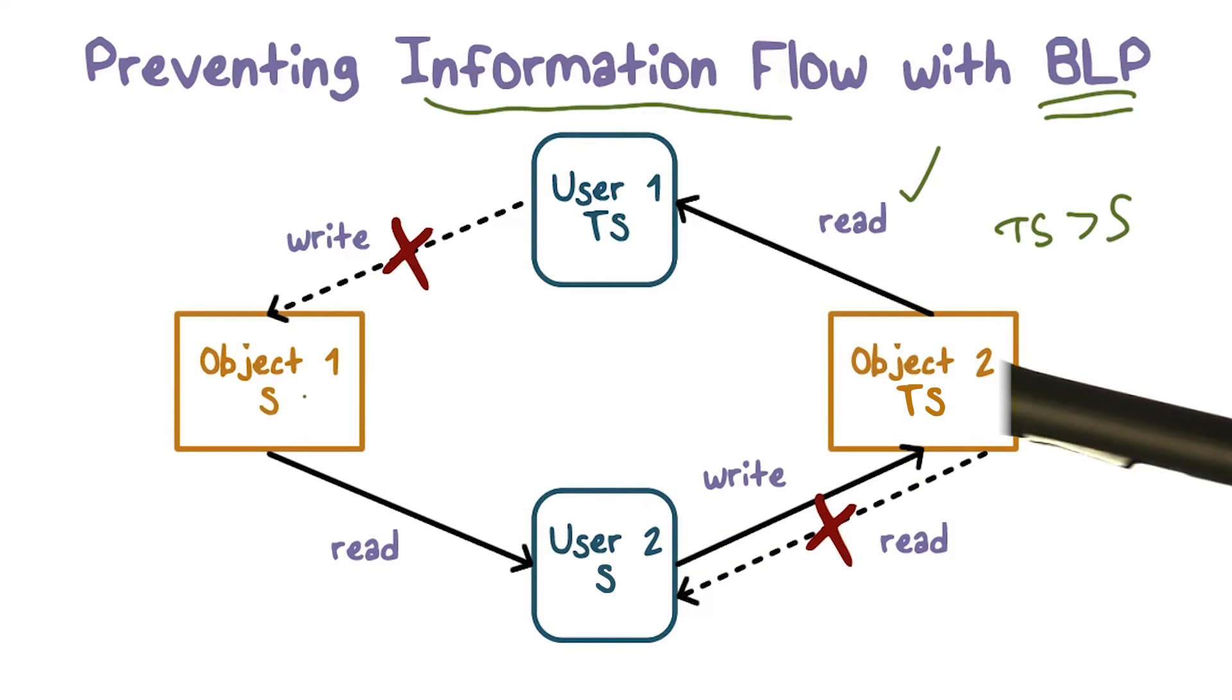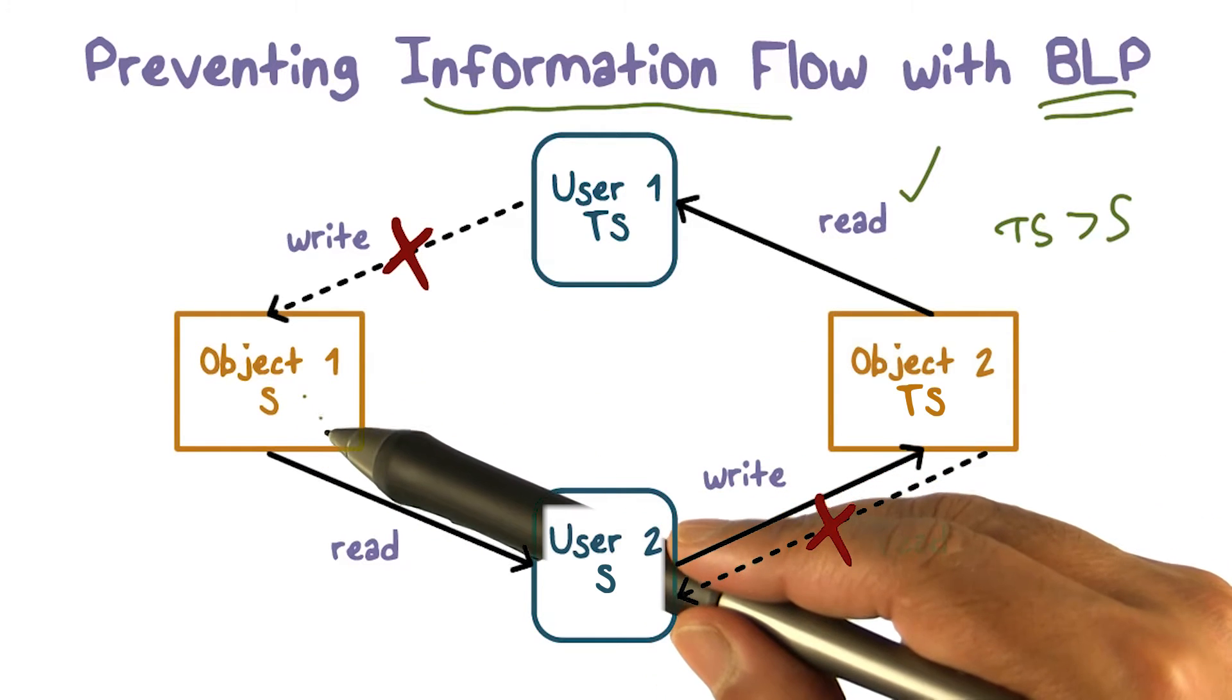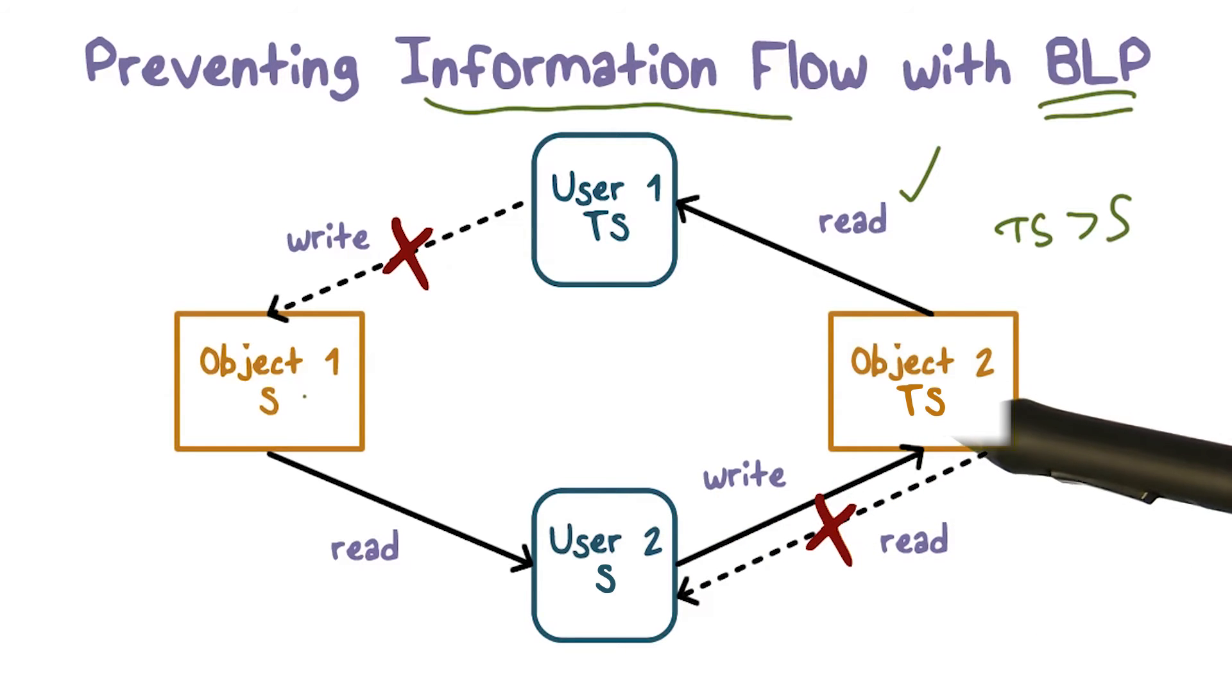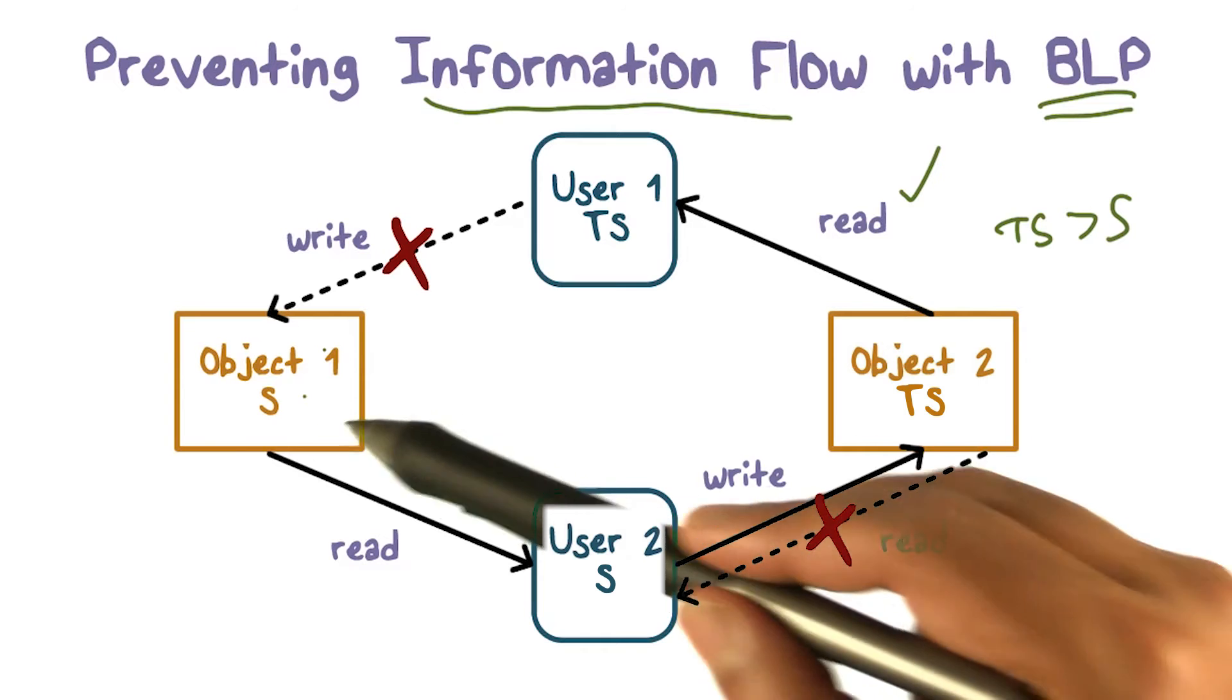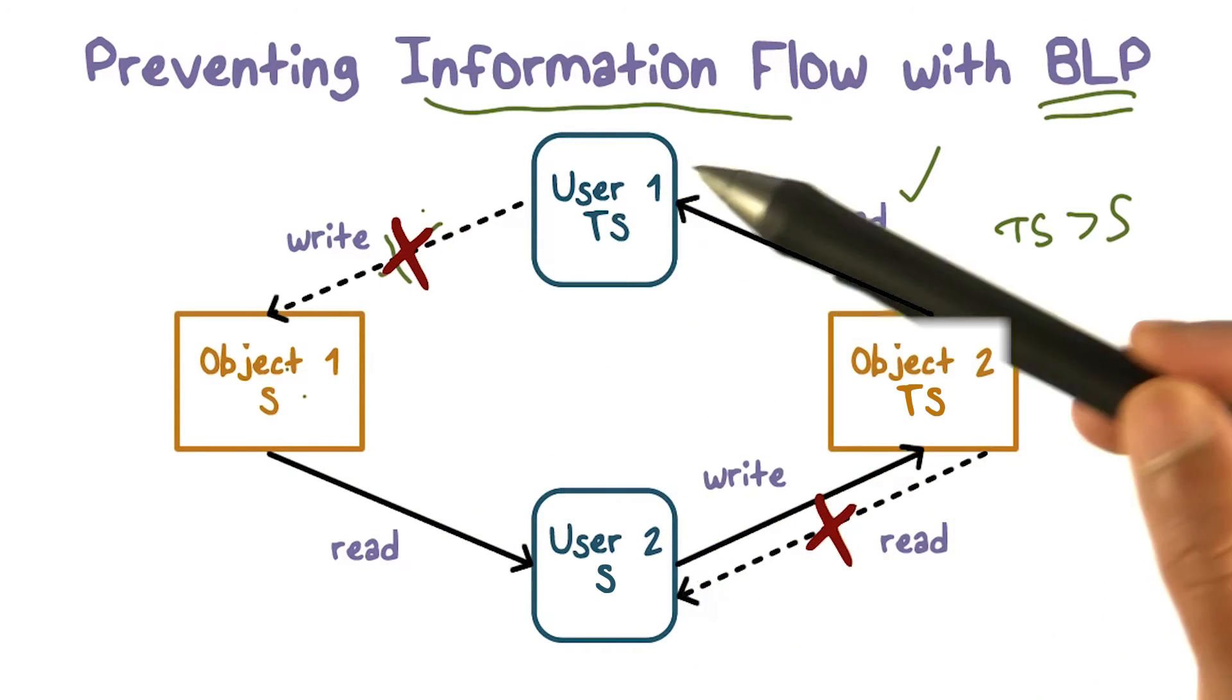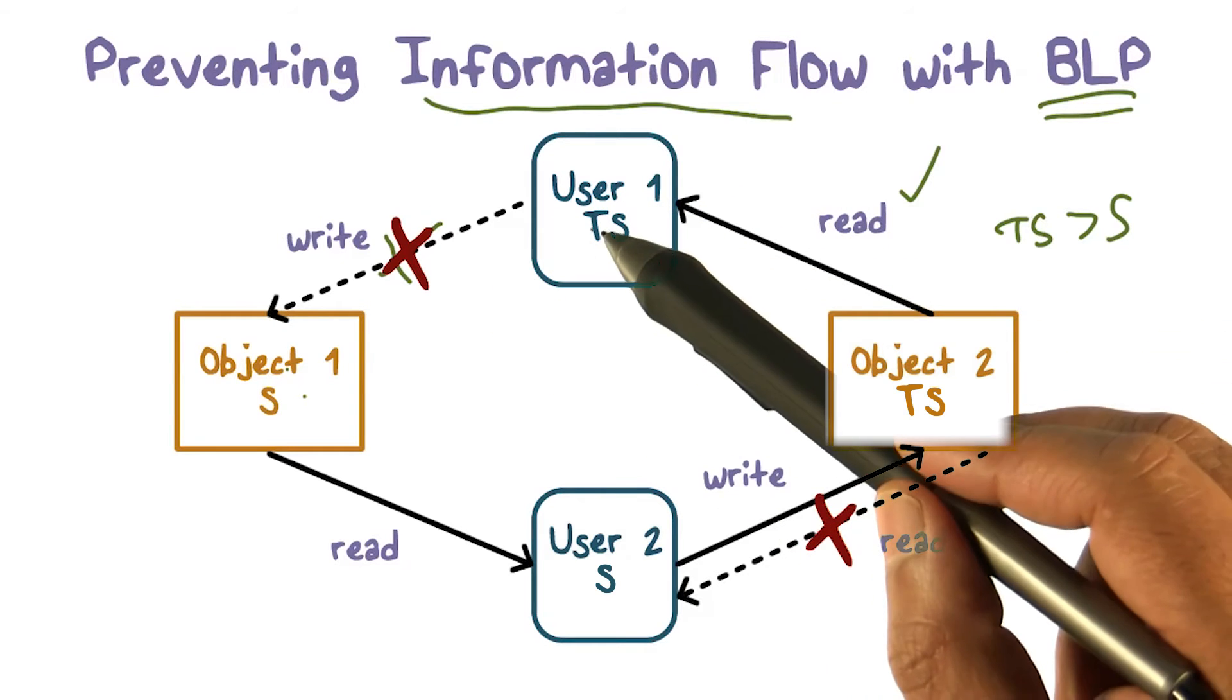For someone who's not top secret to be able to read this information, the object we create has to be secret, isn't it, or lower. Because if it's TS, then it's just like here. They won't be able to read object two, they won't be able to read object one. So if the object is at the lower level, then the write rule says what? You can only write up, you can't write down.